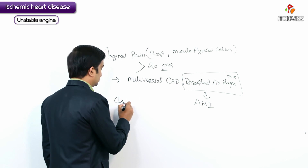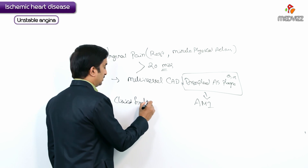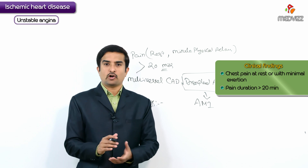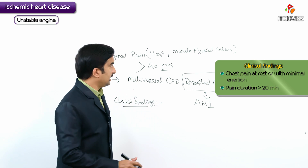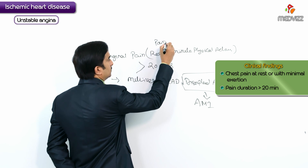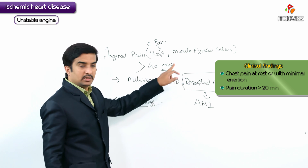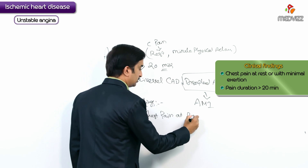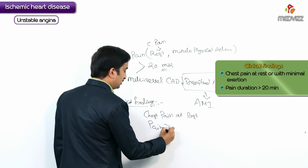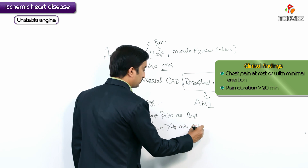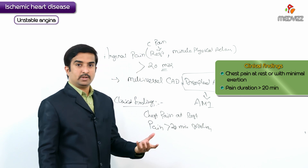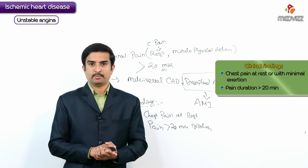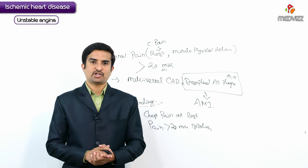The clinical findings of unstable angina include frequent bouts of chest pain occurring at rest or with minimal physical exertion. The pain is prolonged, lasting greater than 20 minutes. Chest pain at rest with duration greater than 20 minutes, even with minimal physical activity, are the hallmark clinical findings of unstable angina.